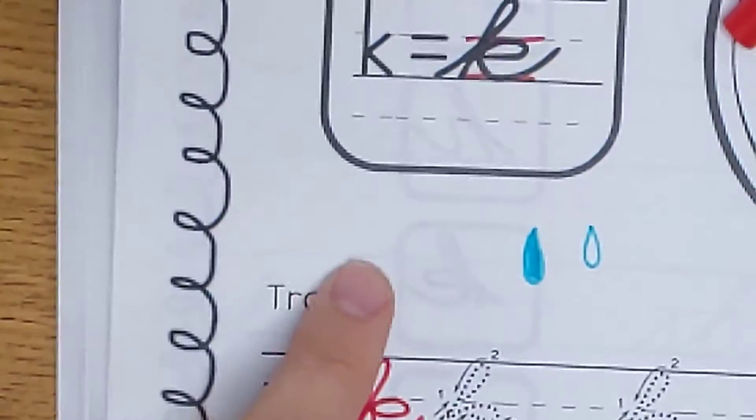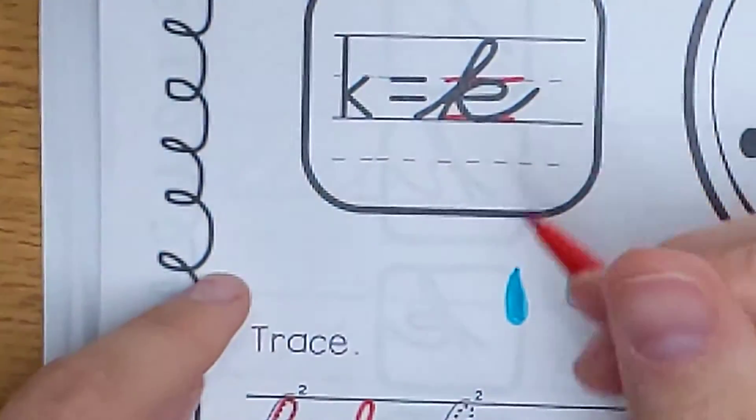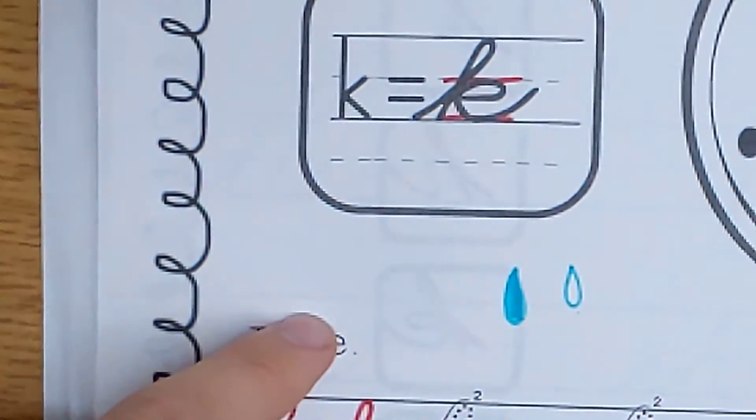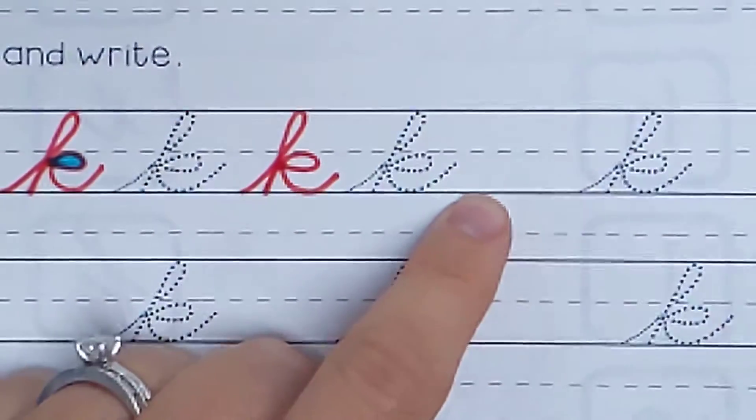Let me do one wrong. Look up here. I'm going to do one wrong. And I want you to figure out what I'm doing wrong. Actually, I'm going to do a wrong one here. Just watch. Put your pencil down.